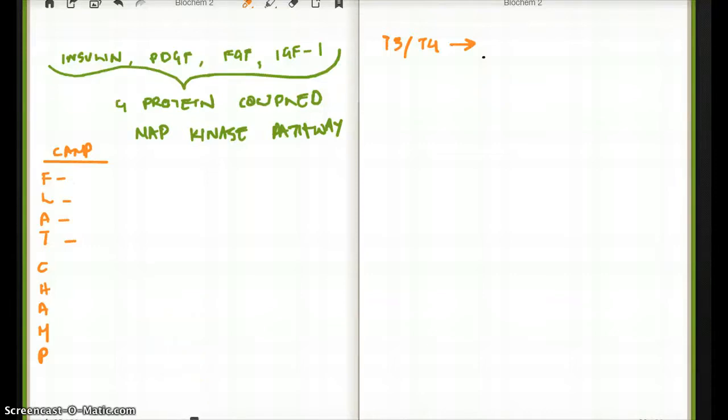So let's continue with our discussion. The FLAT CHAMP is going to stand for all the hormones released from the pituitary and some more.